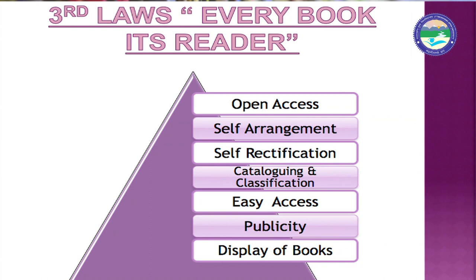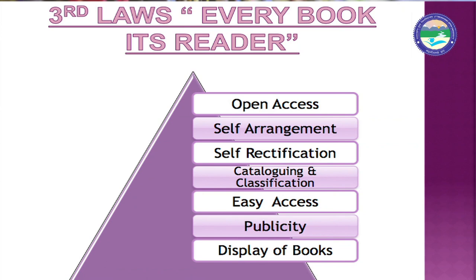Now let's talk about the third law: Every book its reader. Historically, the second and third laws were originally one combined law — 'every book is its reader and every reader has their book.' They were then separated into two laws, giving us five laws in total. Now let's discuss the third law: every book is a reader's book.